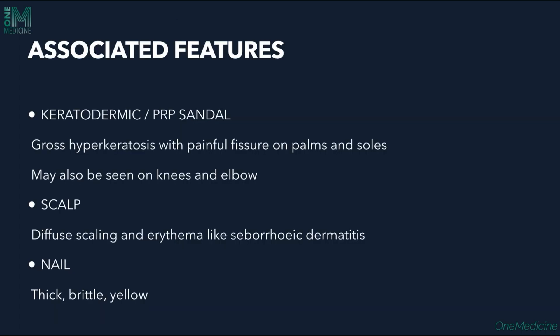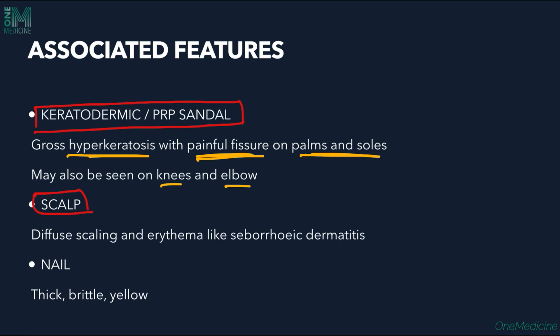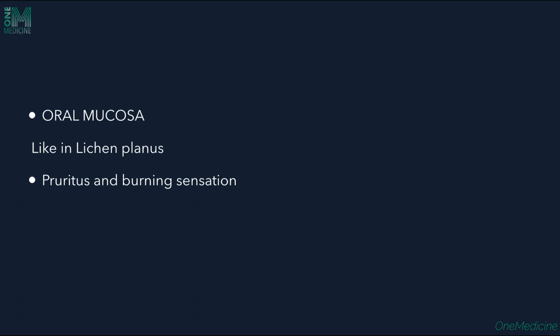Associated features include: first, the PRP sandal — there is gross hyperkeratosis of the palms and soles with fissures, and the knees and elbows may also be affected. Second, the scalp shows diffuse scaling erythema similar to seborrheic dermatitis. Nails are thick, yellow, and brittle. Oral mucosa changes resemble lichen planus with reticular violaceous hue on the buccal mucosa; pruritus and burning sensation may also be present.